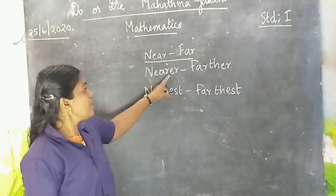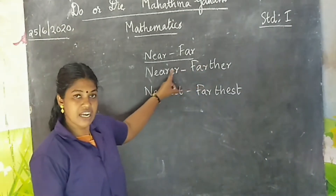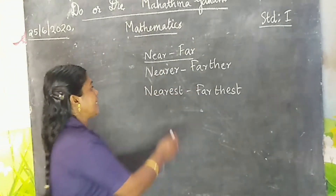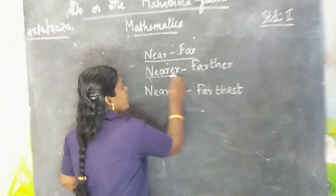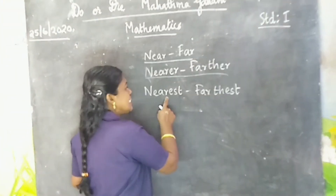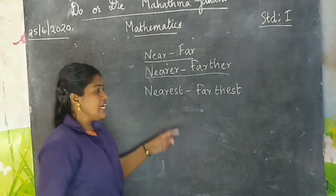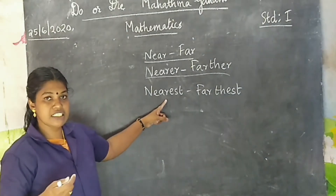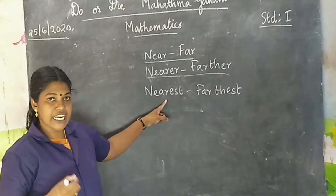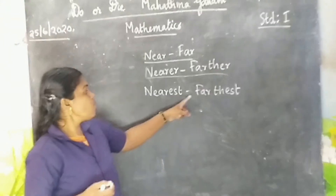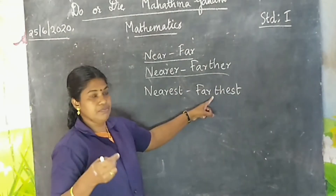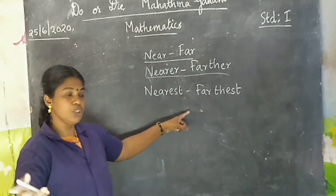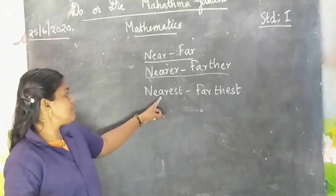Nearer, farther. Nearer means adutth, farther means dhuri. And nearest, farthest. Nearest means e-tum adutth. Farthest means e-tum agale, alangil e-tum dhuri.